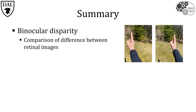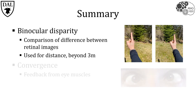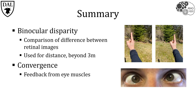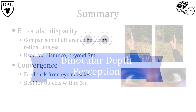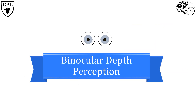To summarize, there are two binocular processes that contribute to depth perception. The first is binocular disparity, which is the comparison of the differences between left and right retinal images — useful for judging depth beyond about 3 meters. The second is convergence, which is the feedback from contraction of the eye muscles, best for judging the distance of objects within about 3 meters of the face. Both methods require the use of both eyes, and our ability to judge visual depth is critical for gauging distances between objects and maneuvering through our three-dimensional world.